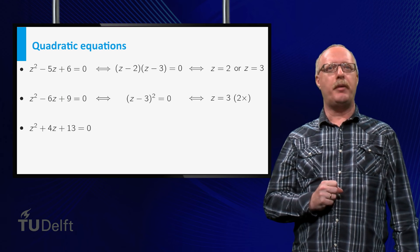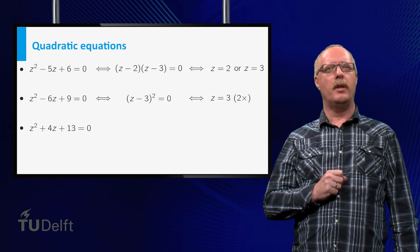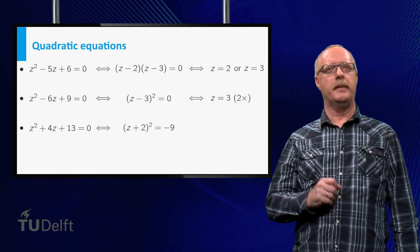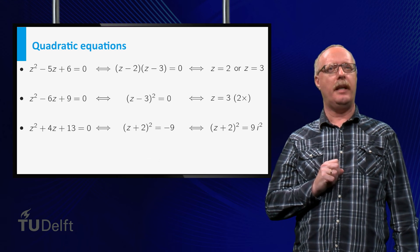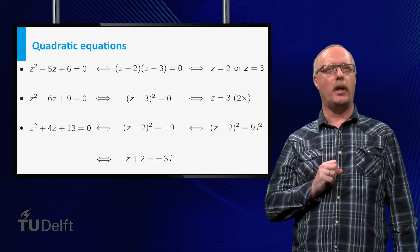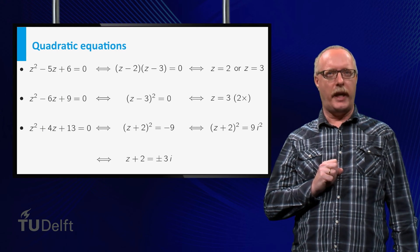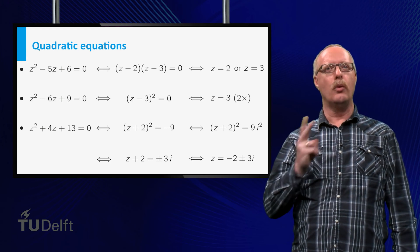However, if it has no real solutions, we can complete a square. Then this square should be negative, and with the convention that minus 1 equals i squared, we find two complex solutions.